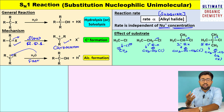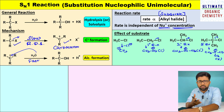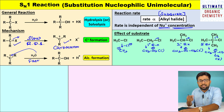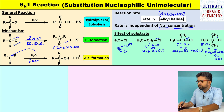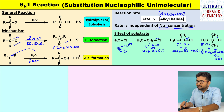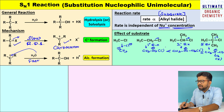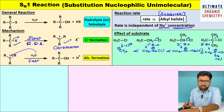I have already made videos on stability of carbocation. Among carbocations, the tertiary butyl cation is the most stable, followed by the secondary cation, then the primary cation, and the least stable is the methyl cation.